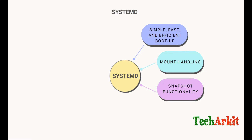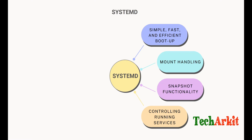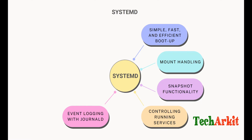systemd also has snapshot functionality. If your system is corrupted or something goes wrong during startup, the snapshot functionality allows you to roll back to a previous system state. For controlling running services, systemd provides tools for starting, stopping, restarting, and managing services using the 'systemctl' command — you can enable, start, and stop services through it.